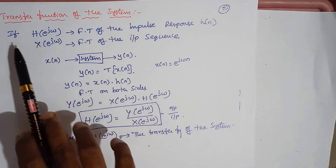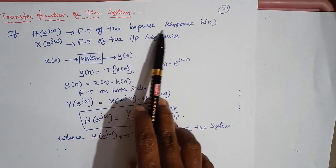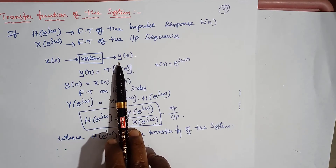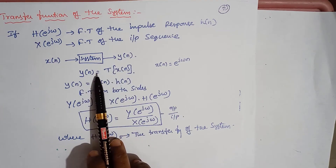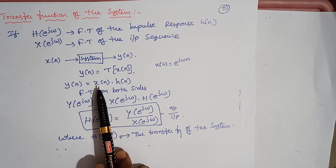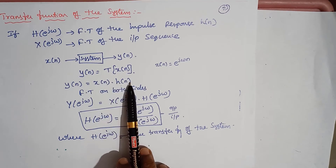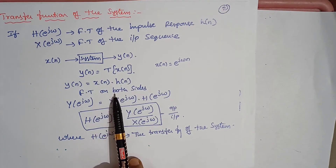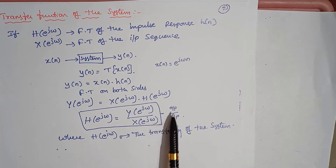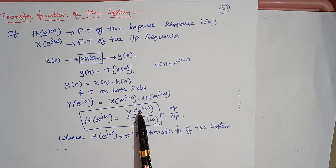Let us see the transfer function of the system. If H of e power j omega is the Fourier transform of the impulse response H of n, and we apply X of n to the system, the system gives output Y of n. We can say Y of n equals the transfer function times X of n, so we get output equal to X of n multiplied with the impulse response. Applying Fourier transform on both sides, we get Y of e power j omega equal to X of e power j omega times H of e power j omega. From this, H of e power j omega equals Y of e power j omega divided by X of e power j omega — that is output divided by input. So the transfer function is the ratio of output to input, where H of e power j omega is the transfer function of the system.